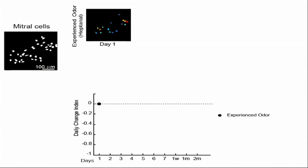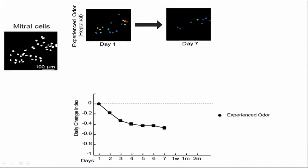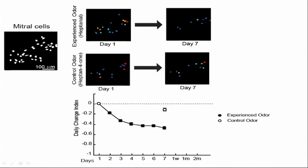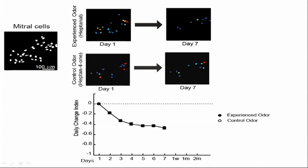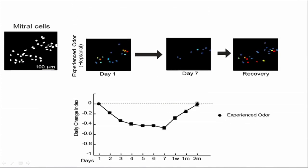Next, we asked how mitral cell odor representations in awake mice are shaped by experience. By monitoring the response of the same sets of mitral cells to a panel of odors, we found that odor experience causes a gradual sparsening of mitral cell responses, which accumulates across days. This plasticity is odor-specific, shown by the observation that the same mitral cells still respond strongly to control odors, and the plasticity recovers gradually over months.